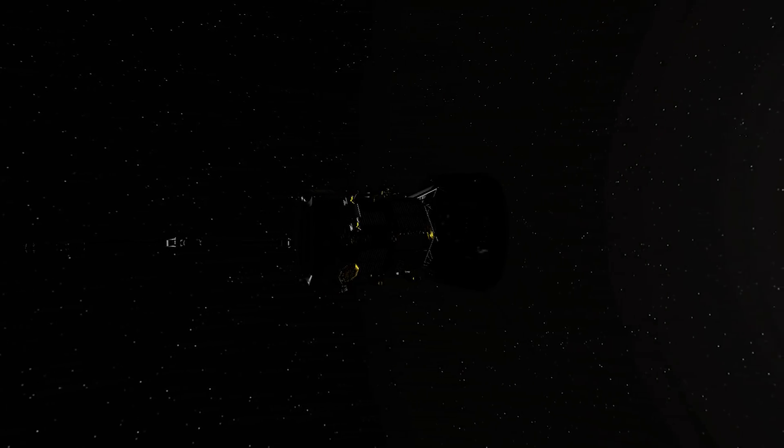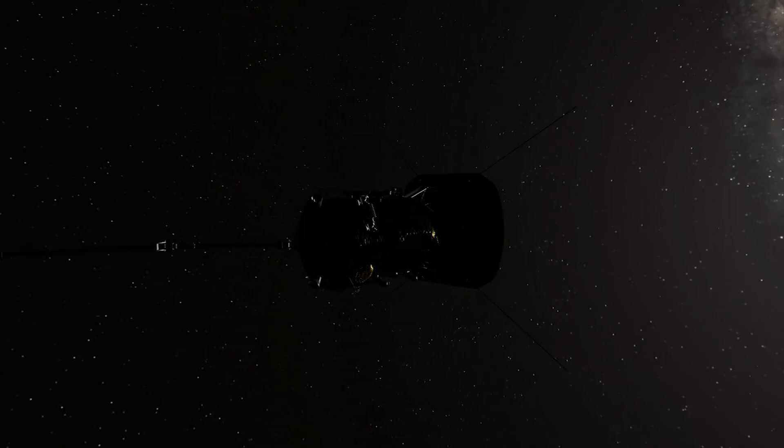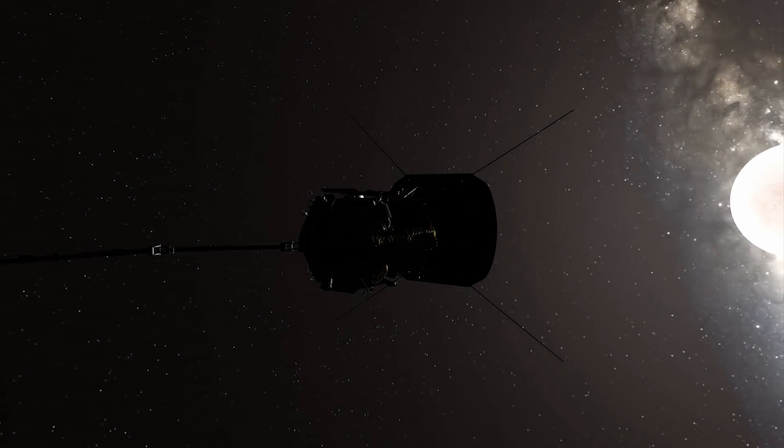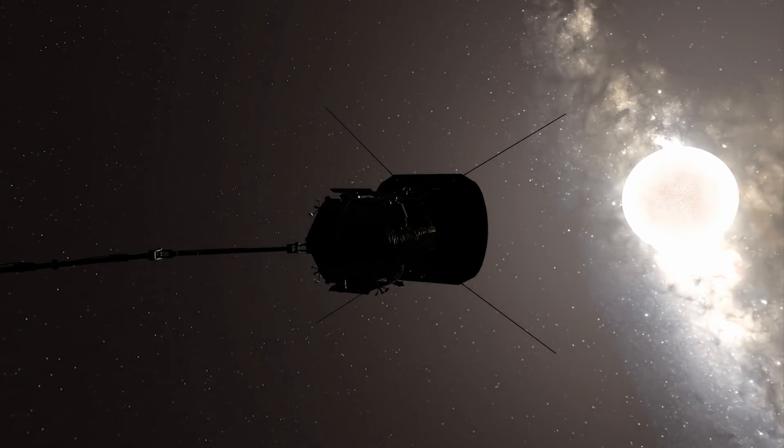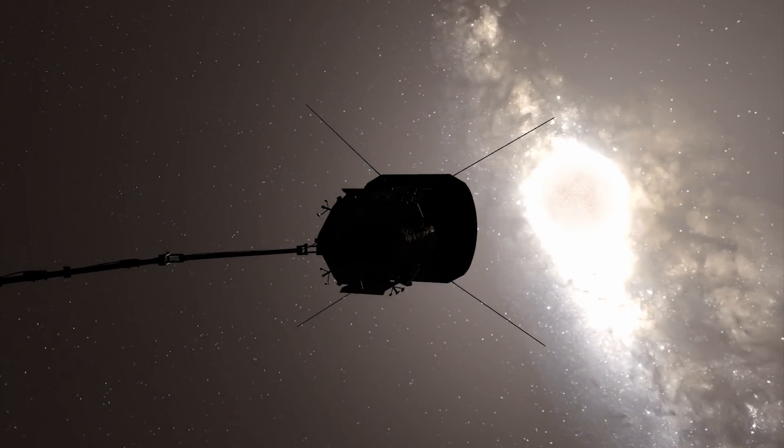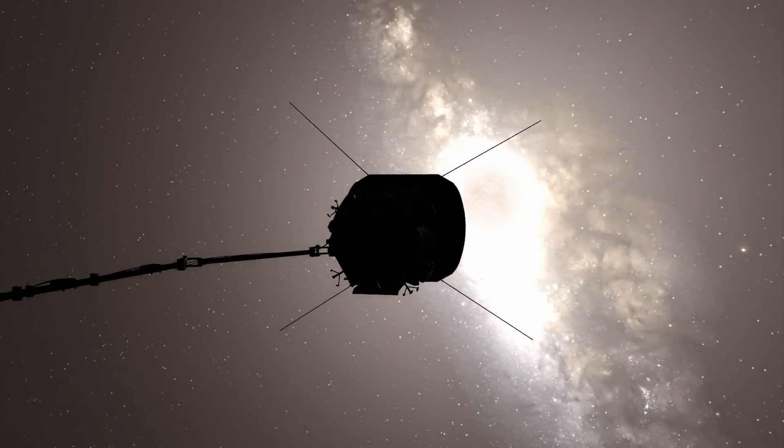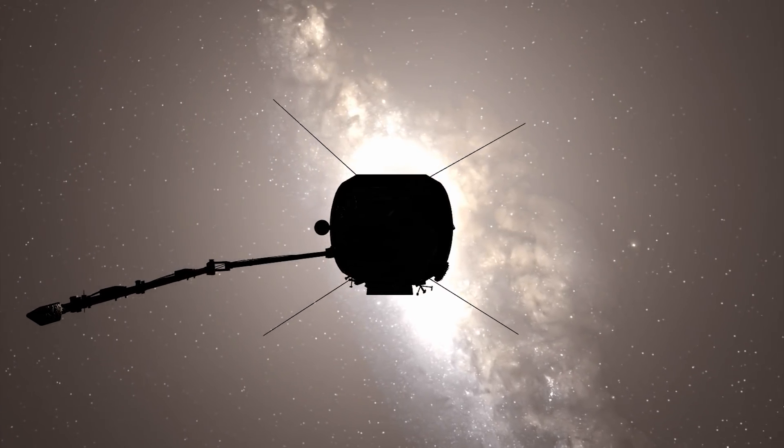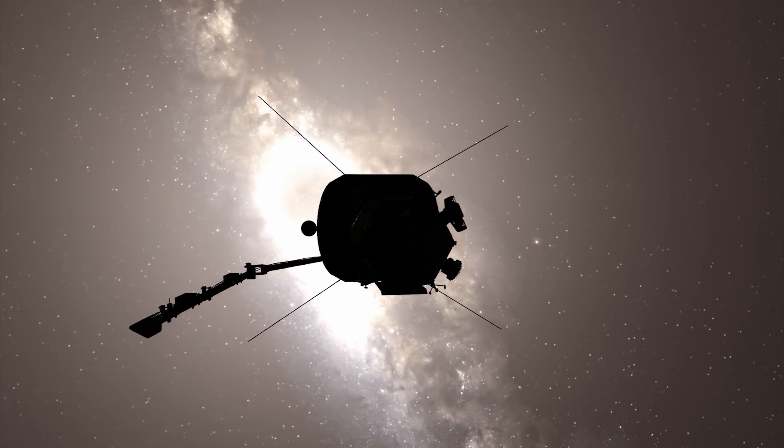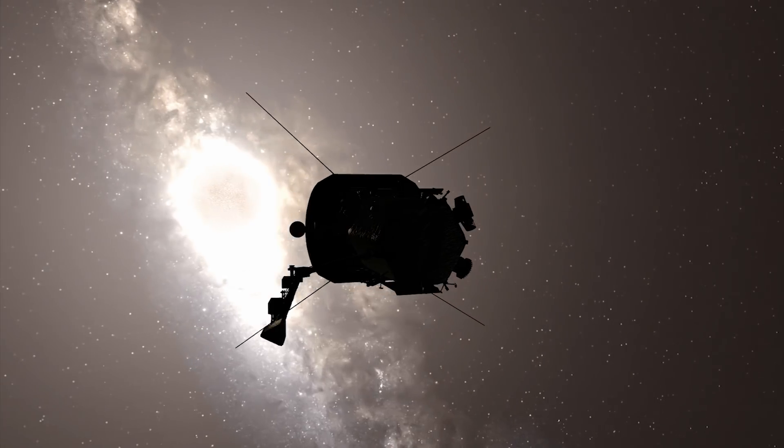To perform these unprecedented investigations, the spacecraft and instruments will be protected from the Sun's heat by a 4.5-inch thick carbon composite shield, which will need to withstand temperatures outside the spacecraft that reach nearly 2,500 degrees Fahrenheit.